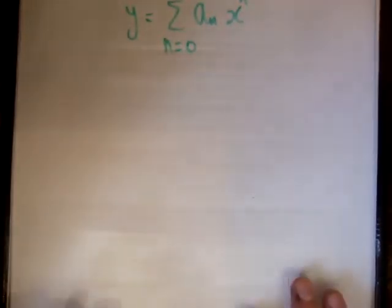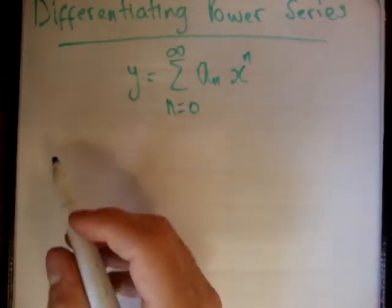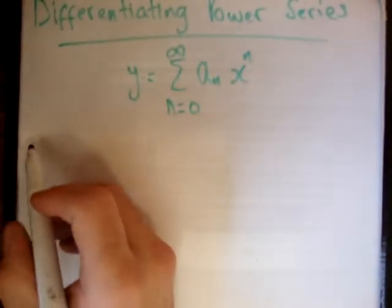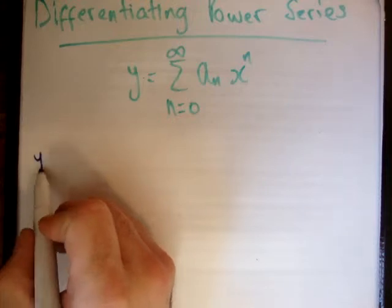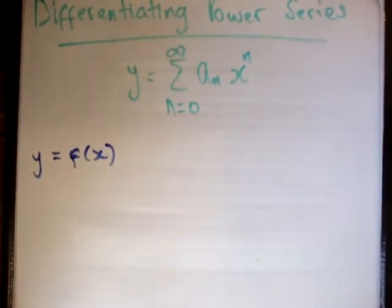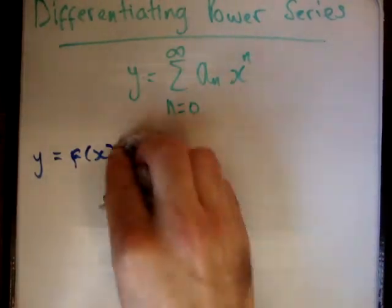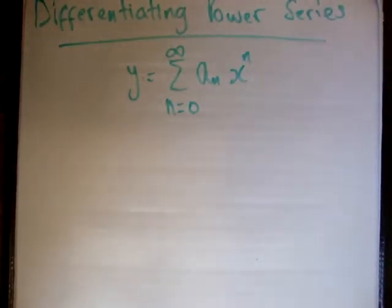Alright, so to differentiate a power series is exactly that. So let's go ahead and differentiate this. Now before I do it, I'm going to show you some notation. So obviously, in this case, we have a function of x, like y is clearly a function of x. It's not a function of n, it's a function of x. n is just an order, really.